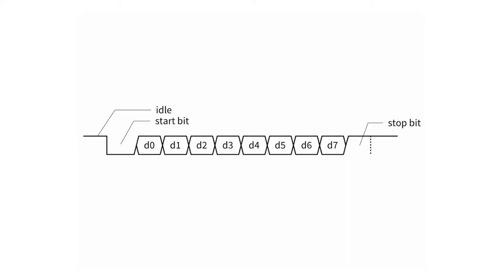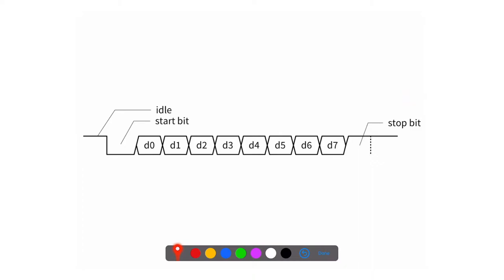This figure shows, in time from time zero to the end of the transmission, how a transmitter actually sends something to a receiver over a single wire. The wire connecting the transmitter and receiver is generally kept at high during idle — basically kept at one. When the transmitter wants to send something, it drives that wire to low, and that indicates the start bit.